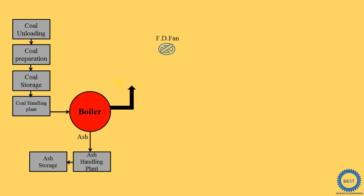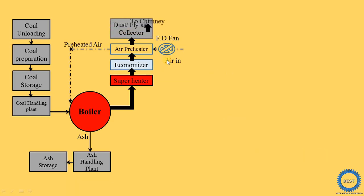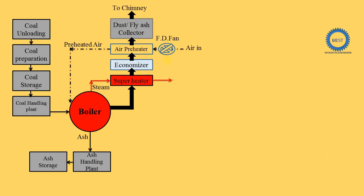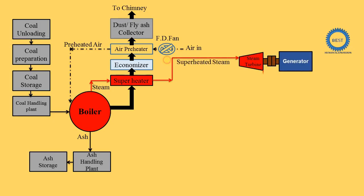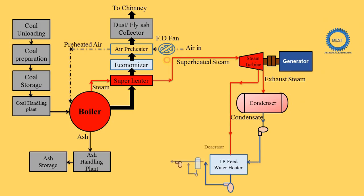For the sake of simplicity, we divide this diagram into four circuits. The first circuit is called the coal and ash circuit. The second one is the air and flue gas circuit. The third circuit is the water to steam circuit, meaning water is converted into steam. And the fourth circuit is the cooling water circuit.